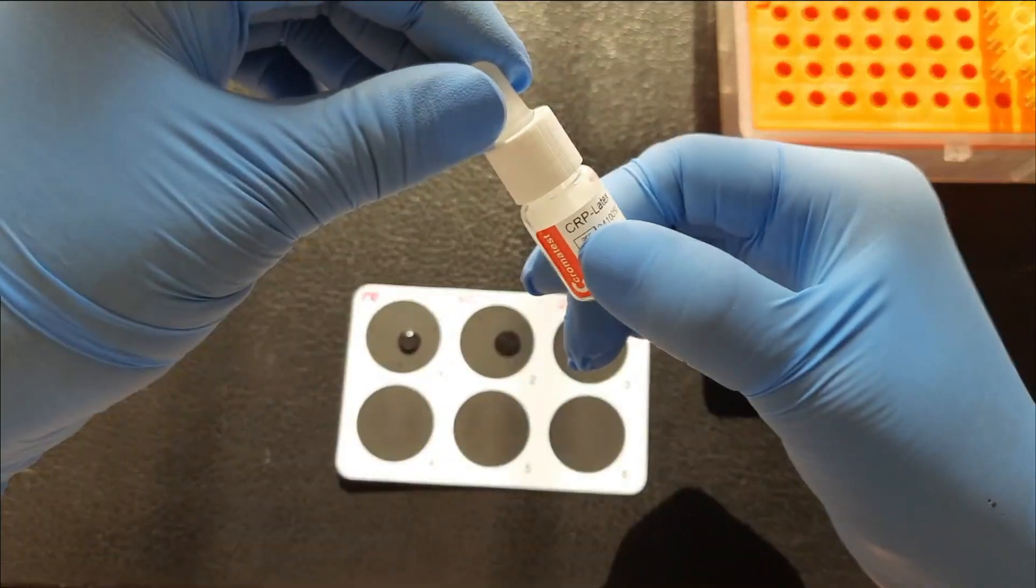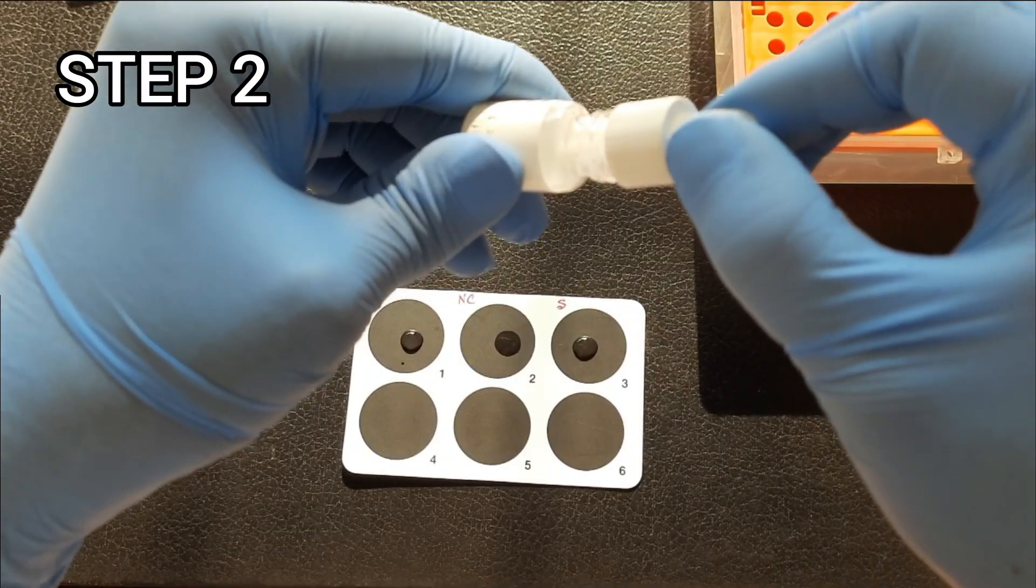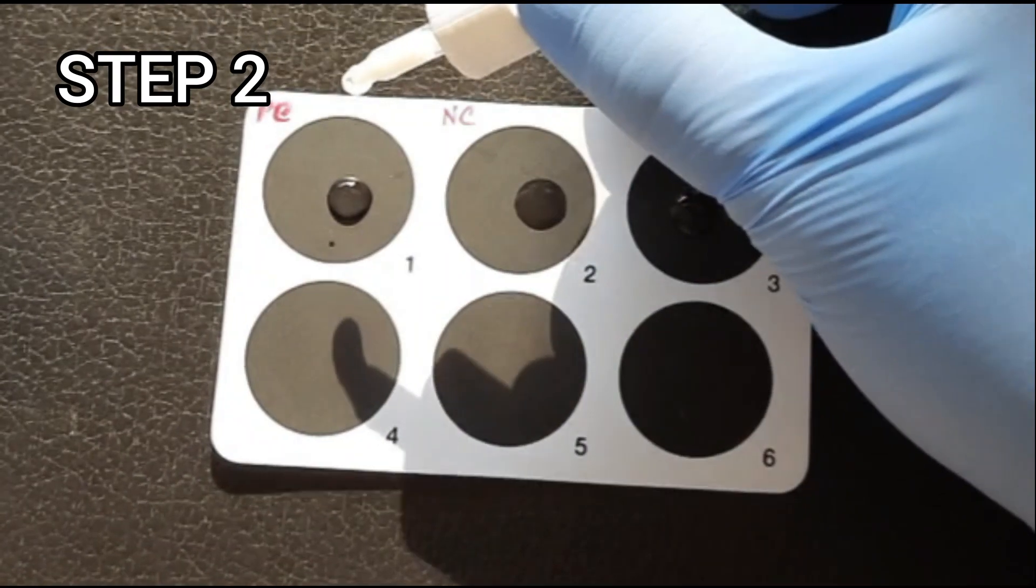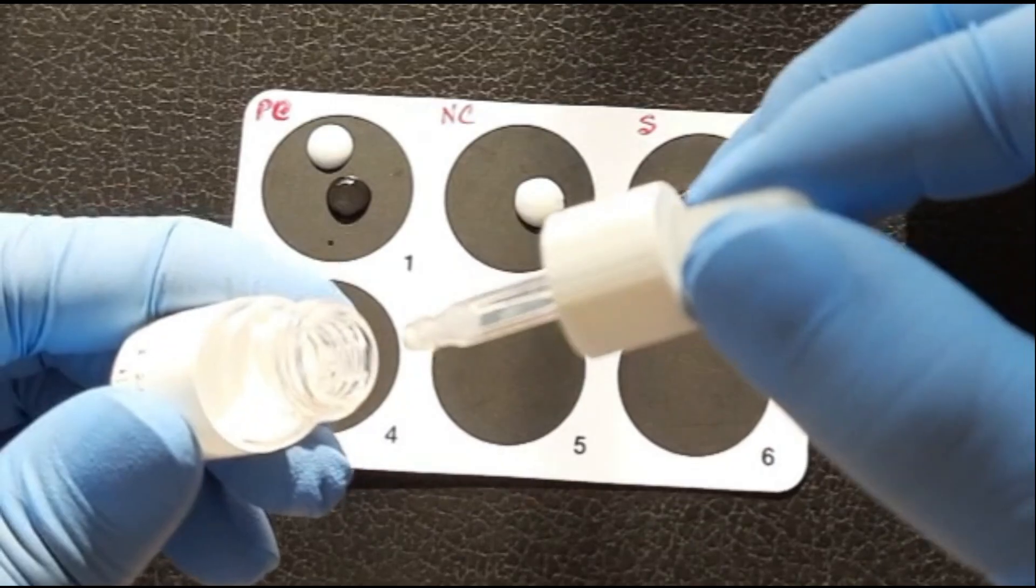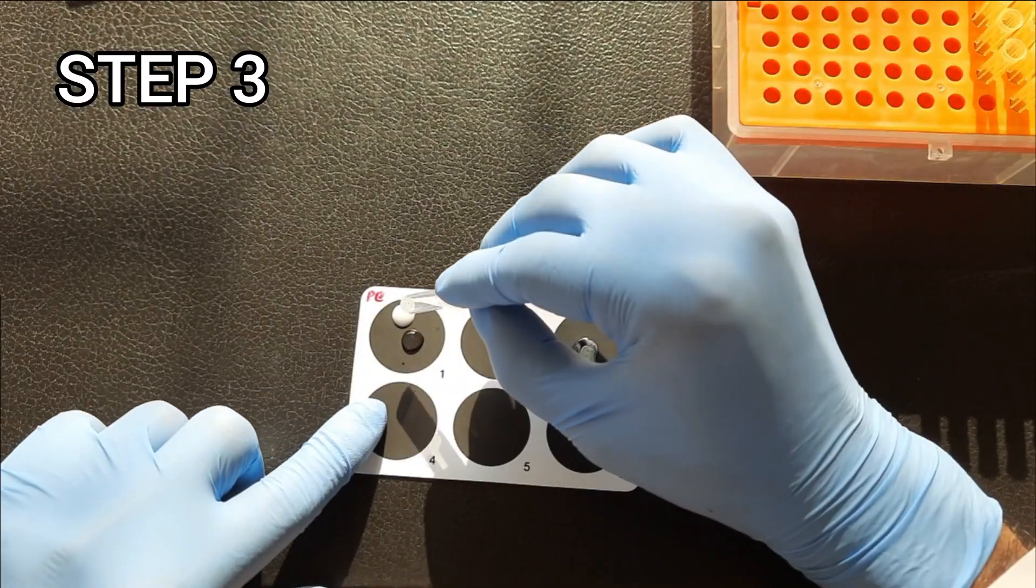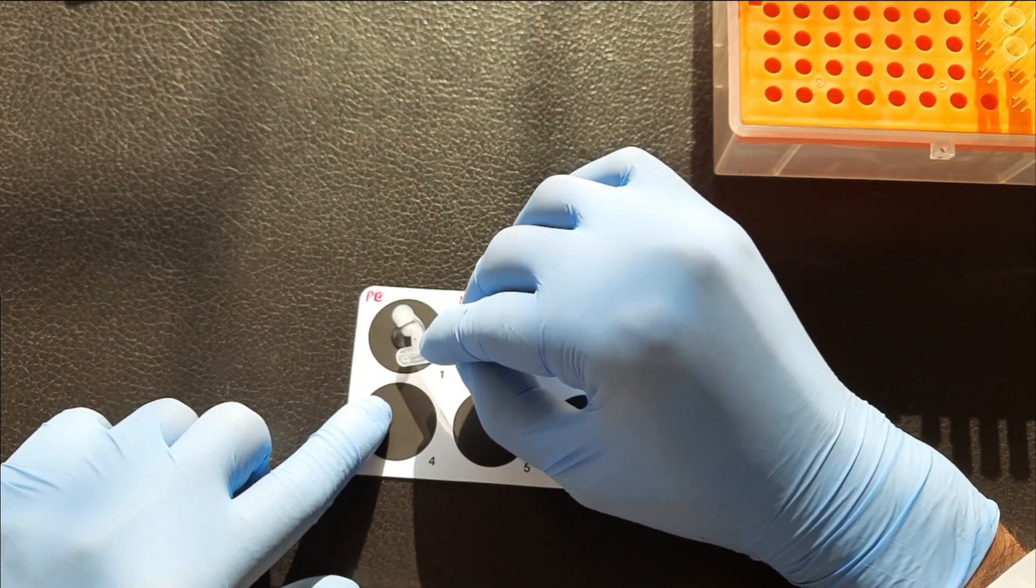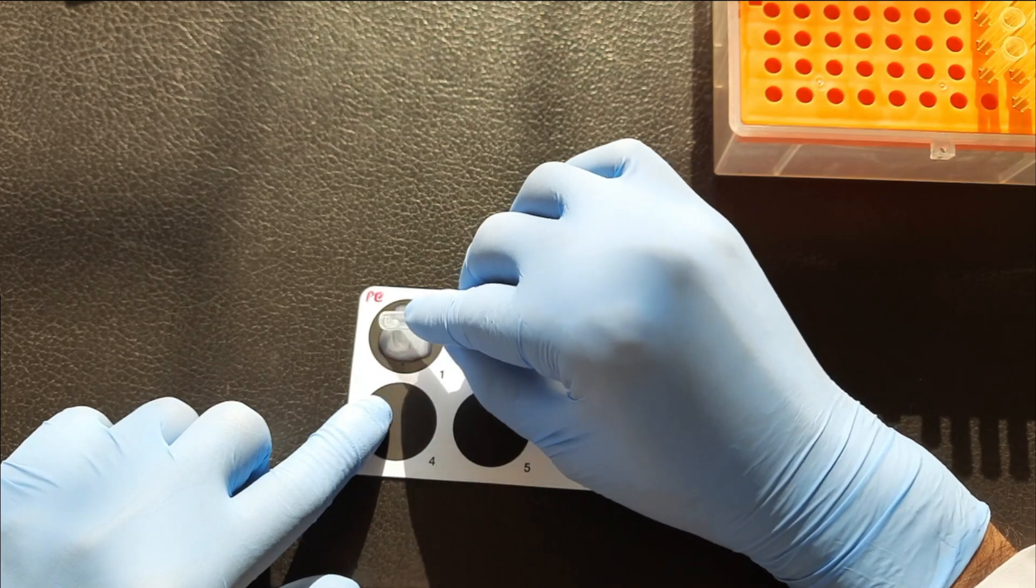Step 2. Add one drop of CRP latex reagent on each circle. Do not let the dropper tip touch the liquid on the slide. Step 3. Using a mixing stick, mix the serum and CRP reagent uniformly over the entire circle.